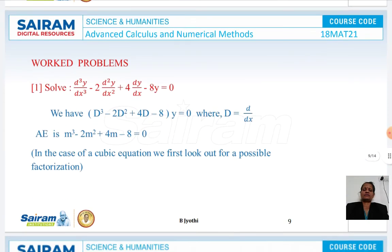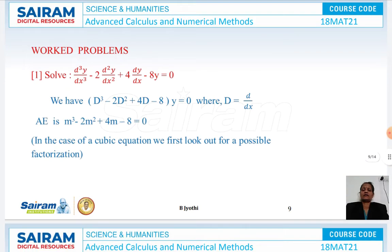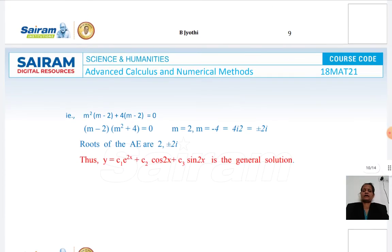Let us see the problems now. Problem 1: Solve d³y/dx³ - 2d²y/dx² + 4dy/dx - 8y = 0. We have D³ - 2D² + 4D - 8 = 0. That is, the auxiliary form is written in terms of m.